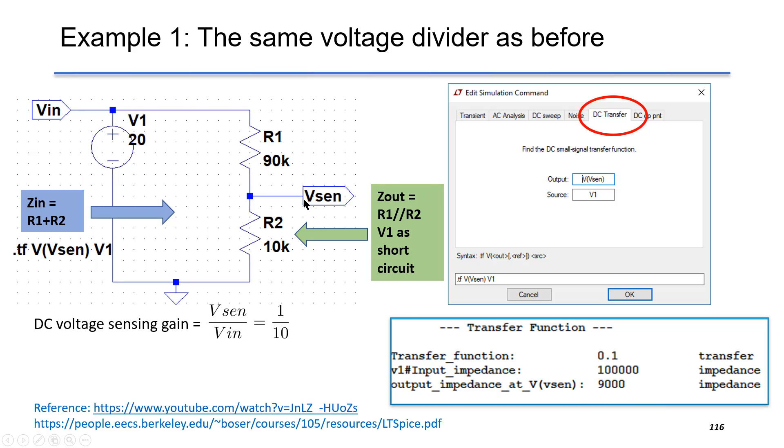The output impedance is found at 9 kOhm. If you look at the point of Vsense, when V1 is disabled and replaced by a short circuit, Zout is simply R1 in parallel with R2 which gives 9 kOhm.